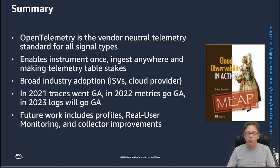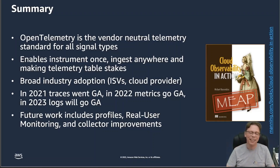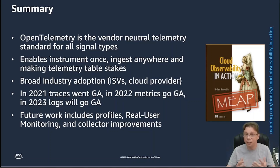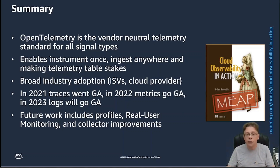Quickly summing up the timeline: in 2021, traces went GA; this year, metrics go GA; in 2023, logs will go GA. Which means if you're considering adopting OpenTelemetry, now is the time. There's also super interesting work going on in the community — earlier this year there was an initiative to bring profiles as a signal type, with continuous profiling tools like Pixie, Parca, and Pyroscope being brought into telemetry, with a working group you can participate in. There's also work on user monitoring and collector improvements. But by and large, the current focus is on logs, and once logs are out the door, the community will move on to those other things.